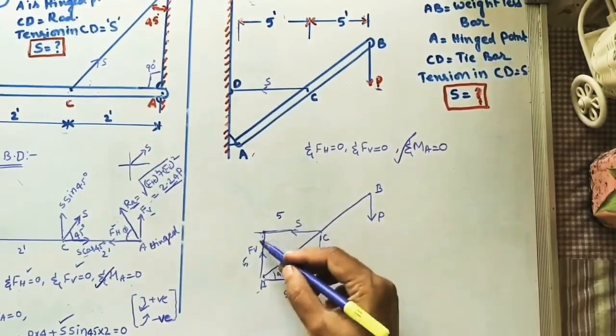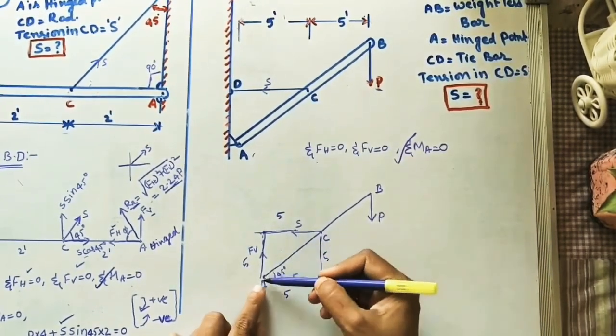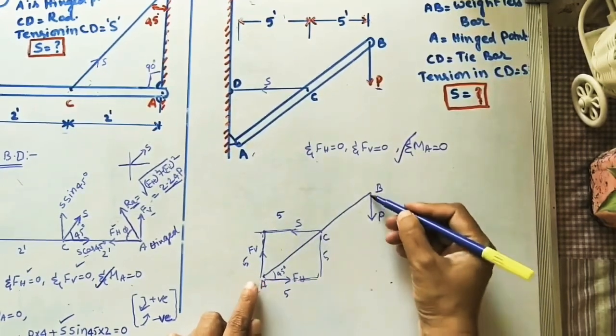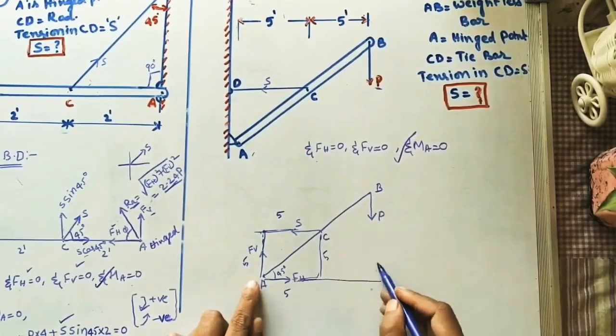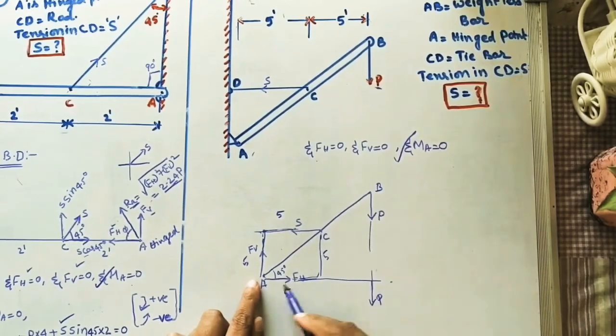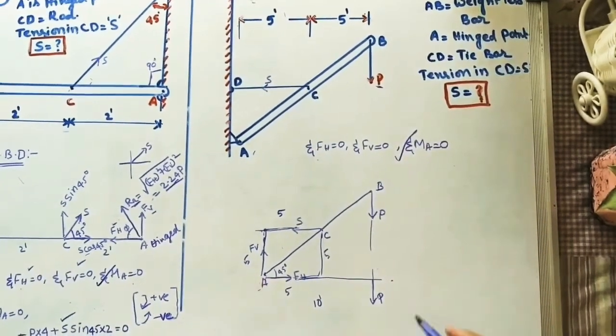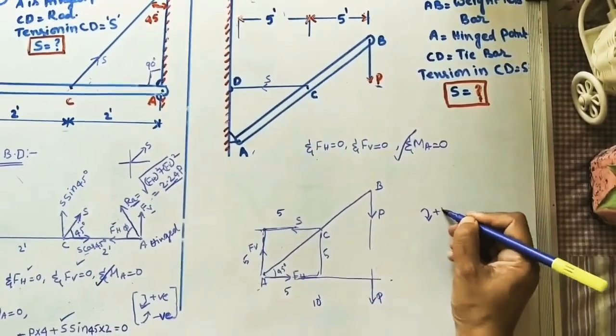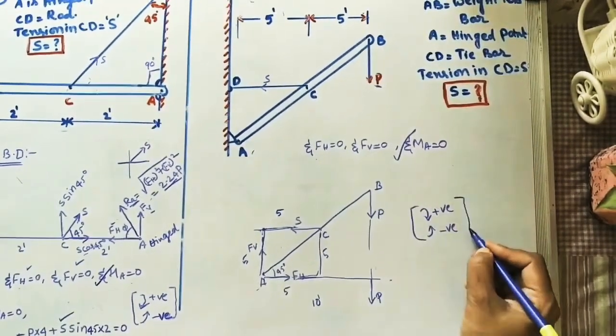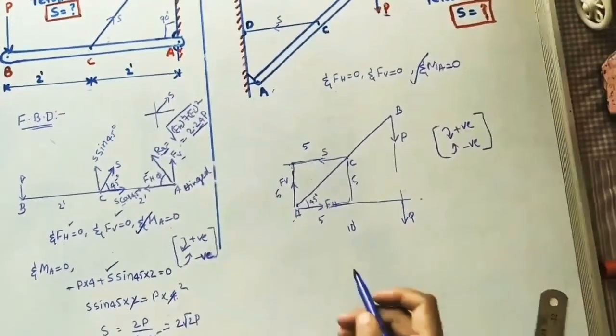Our force is horizontal, so we need to take vertical length: S into 5. Similarly, P into this distance, the total distance is 5 plus 5 equals 10 inches. For clockwise direction I'm taking positive, for anticlockwise negative. Apply the condition sigma Ma should be zero.